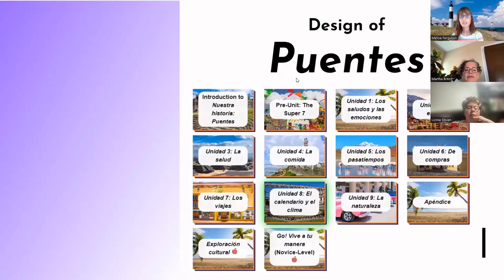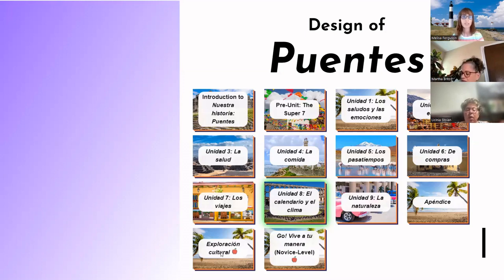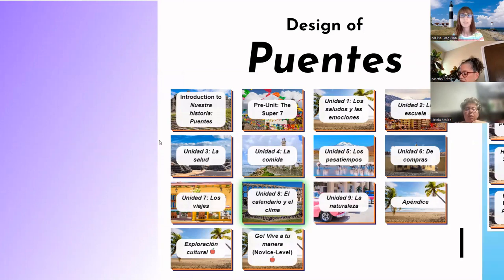The design has nine units, and you can see an overview of what each of those entail. We also have a pre-unit that focuses on the Super 7 — a great way to start your school year getting used to your students and establishing those routines. We also have a cultural exploration and the Go Biba Tu Moneda that you could use, which are also available with other titles.